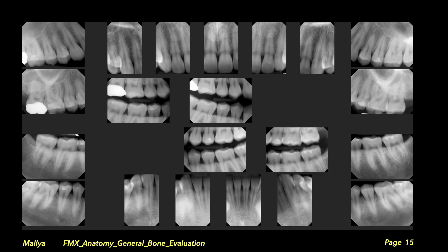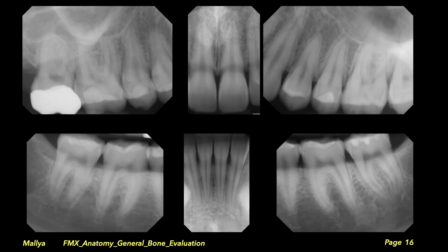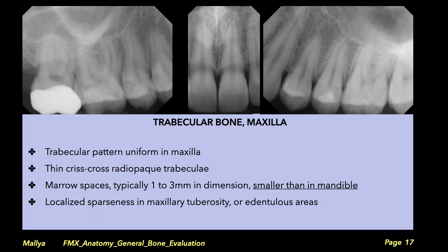Now let's analyze the trabecular pattern on the full mouth X-ray series. These radiographs demonstrate the variation in trabecular pattern between different areas of the jaw. The trabecular pattern in the maxilla is relatively uniform through both the anterior and posterior regions. The trabeculae are thin and form a criss-cross pattern with marrow spaces typically 1–3 millimeters in dimension. Characteristically, these marrow spaces are smaller than those in the mandible. If you find that the marrow spaces in the maxilla are unusually large, the corresponding marrow spaces in the mandible will also be larger.